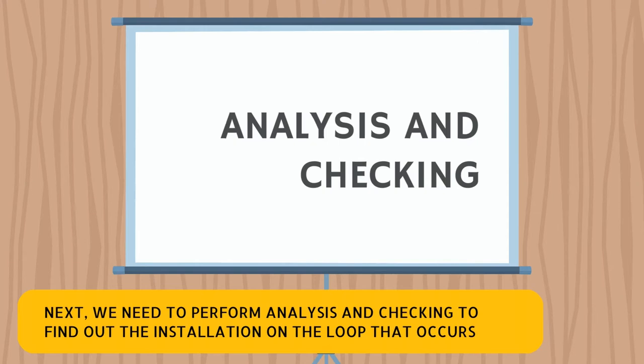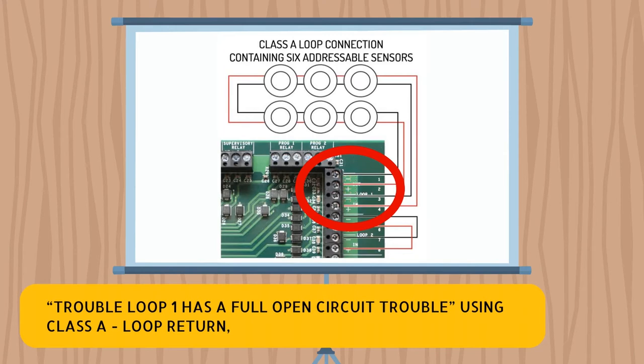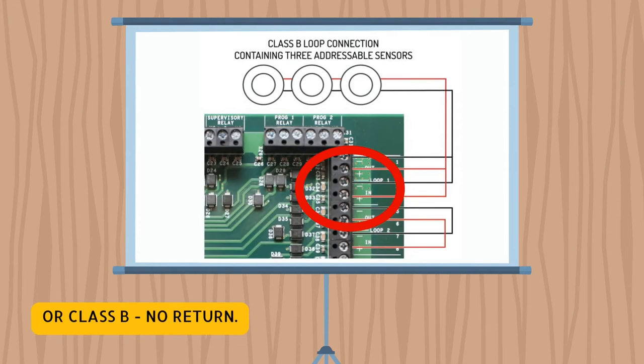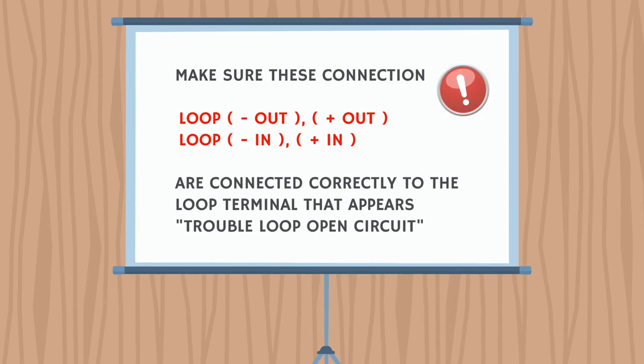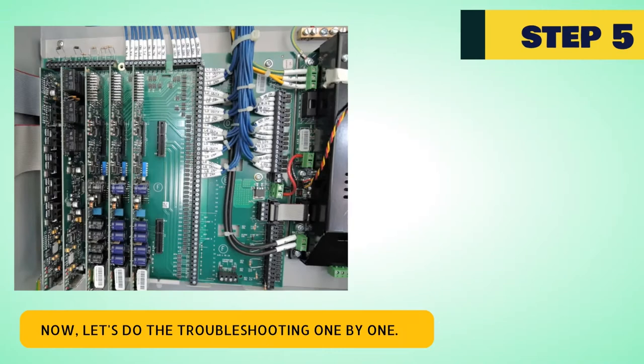Next, we need to perform analysis and checking to find out the installation on the loop that has the fault. Trouble loop 1 has a full open circuit trouble — using class A, loop return, or class B, no return. Make sure these connections are connected correctly to the loop terminal that shows the trouble loop open circuit. Now, let's do the troubleshooting one by one.